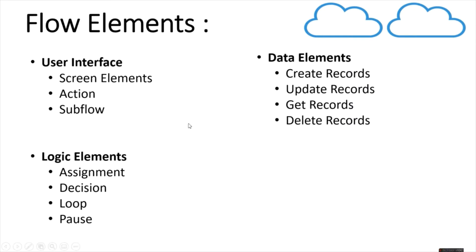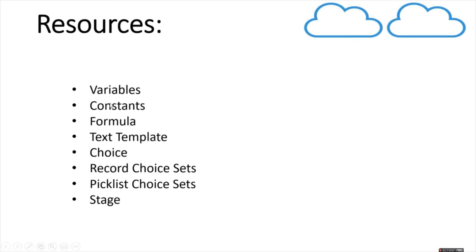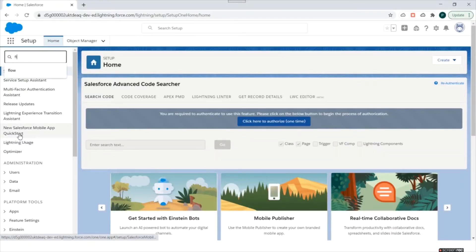The different flow elements are: user interface elements, logical elements, and data elements. Under user interface we have screen elements to take inputs from users, action elements, and subflow — which is calling a flow inside another flow. Under logical elements we have assignment, decision, loop, and pause. Under data elements we can create records, update records, get records, and delete records. Resources available in flows include variables, formulas, constants, choices, record choices, and picklist choice sets.